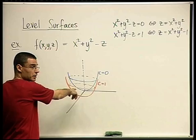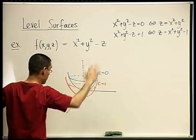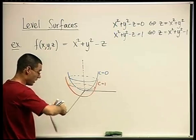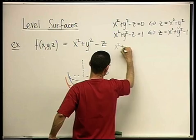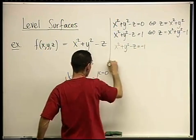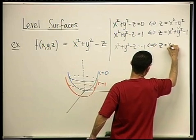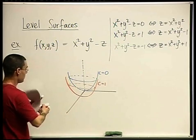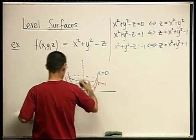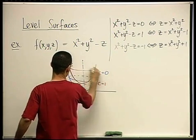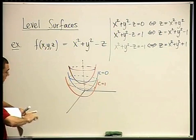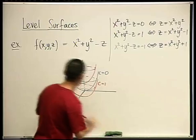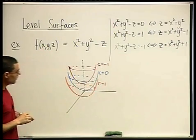And these are just the level surfaces. The function lives somewhere out there in the fourth dimension, the graph, but on all these points the value is one, and on all these points the value is zero. And when is the value going to be negative one, for example? The value is negative one if and only if z equals x squared plus y squared plus one. So that's going to be again a paraboloid, but this time it's going to be sitting further up here, something like this. This is getting blurry, I agree, but what you should imagine is a bunch of bowls, one inside the other. So the red one corresponds to c equals negative one.